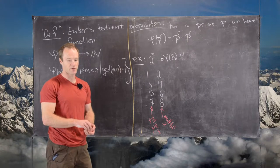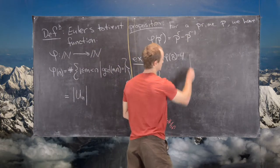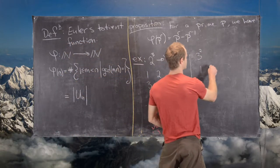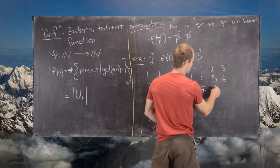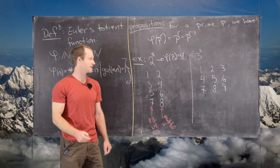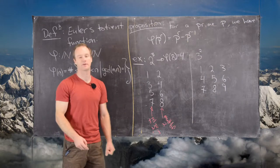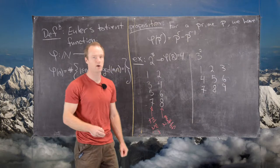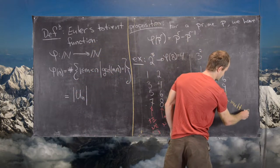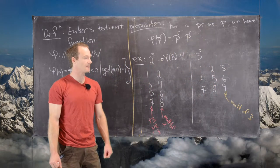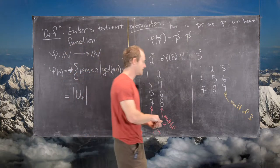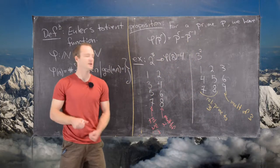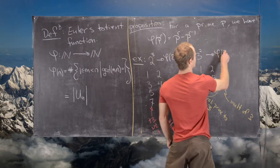Now let's look at 3 squared, which is 9. Again I'll make an array: 1, 2, 3, then 4, 5, 6, then 7, 8, 9. This array is more interesting because it has three columns instead of two — in general we'll have p columns where p is the prime. The last column contains all the multiples of 3. If a number is not a multiple of 3 it is relatively prime to 3, so everything outside that last column is relatively prime to 3. That tells us φ(9) = 6.